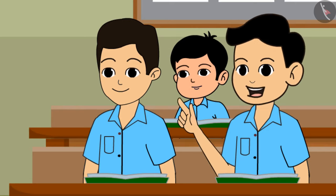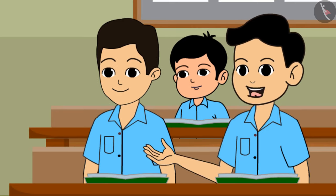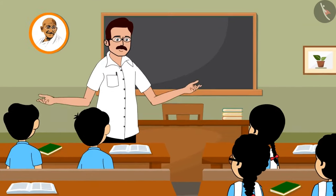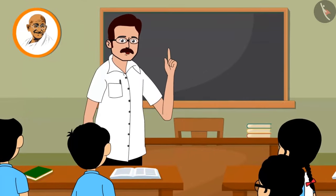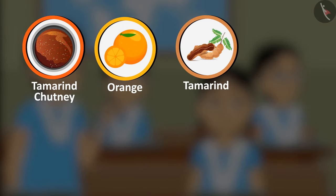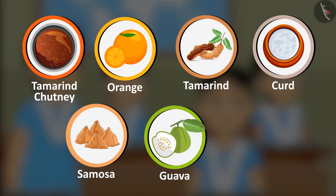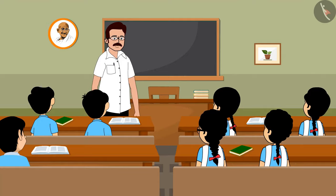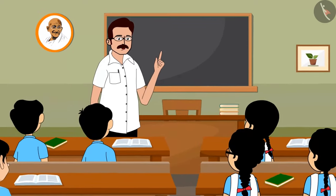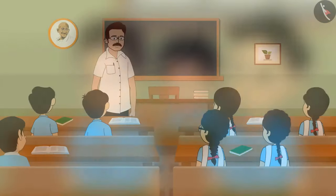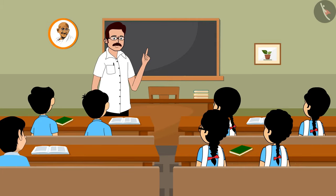I heard that acids are dangerous — Latha was telling me yesterday. Oh no, not all acids are dangerous! Mamta, make a list of the foods you eat that are mostly sour. Tamarind chutney, orange, tamarind, curd, samosa, guava, apple. Do you know that all these foods contain acids which cause the sourness in them?